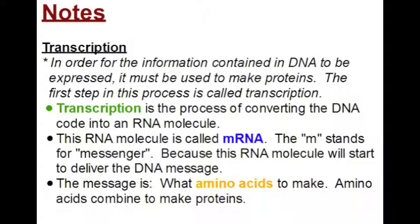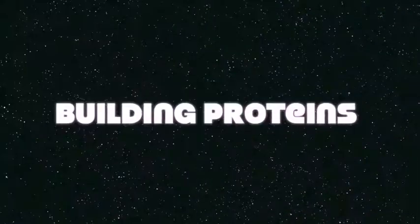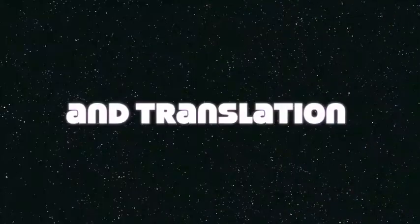In order for the information contained in DNA to be expressed, it must be used to make proteins. The first step in this process is called transcription. Transcription is the process of converting the DNA code into RNA molecules. This RNA molecule is called mRNA — messenger RNA — because it will deliver the DNA message about what amino acids to make and combine to build proteins.